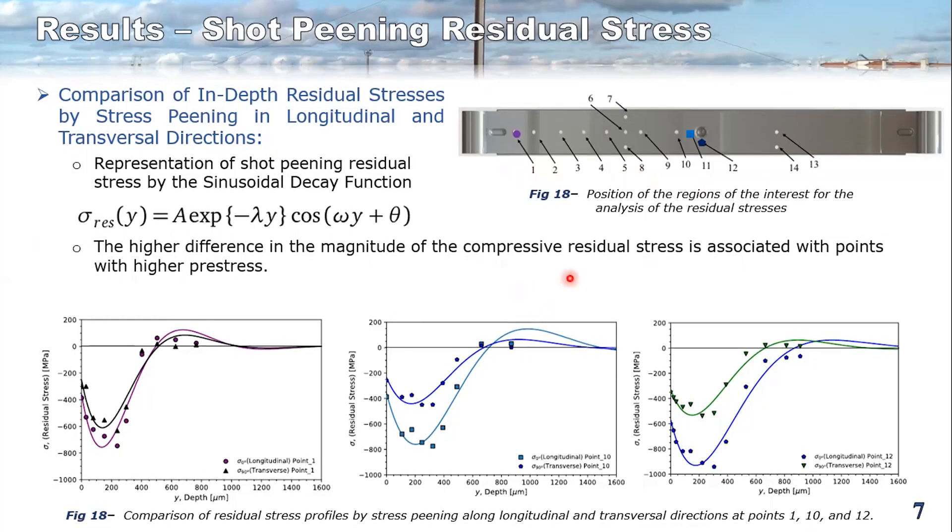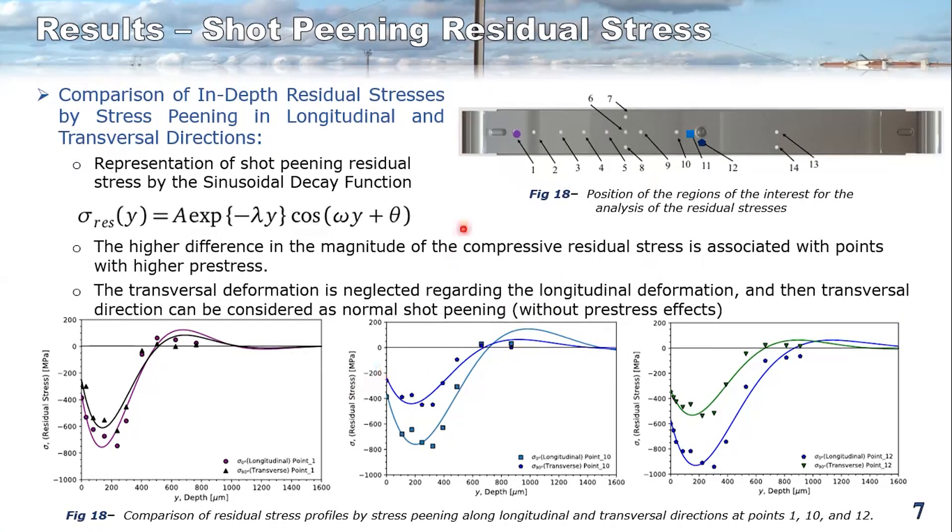So we can observe that, for example, in point one, the difference is inferior than the other ones. That's because of the fact of pre-bending stress. This difference is higher because, let's think about how a leaf is bent. We don't have mainly transversal deformations. So we only have longitudinal deformations. So we only have the effect of pre-bending stress on longitudinal deformation. So we got this difference.